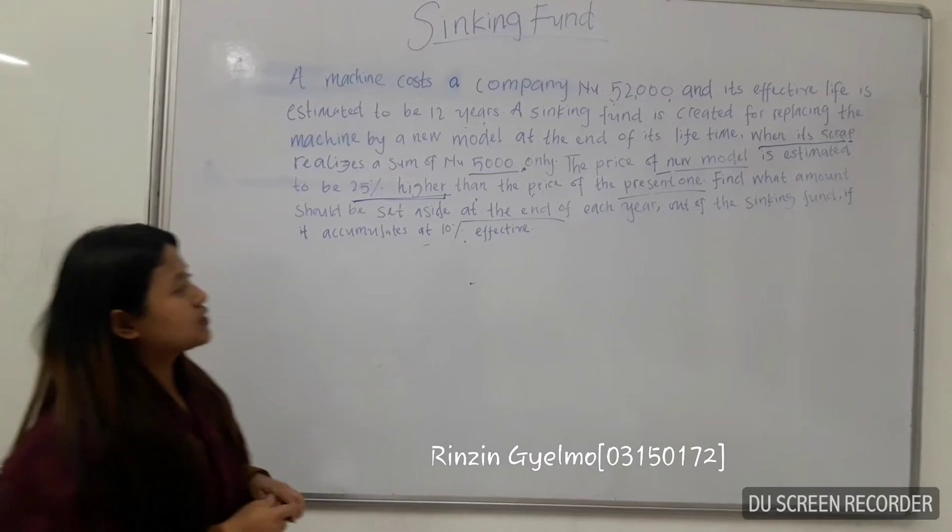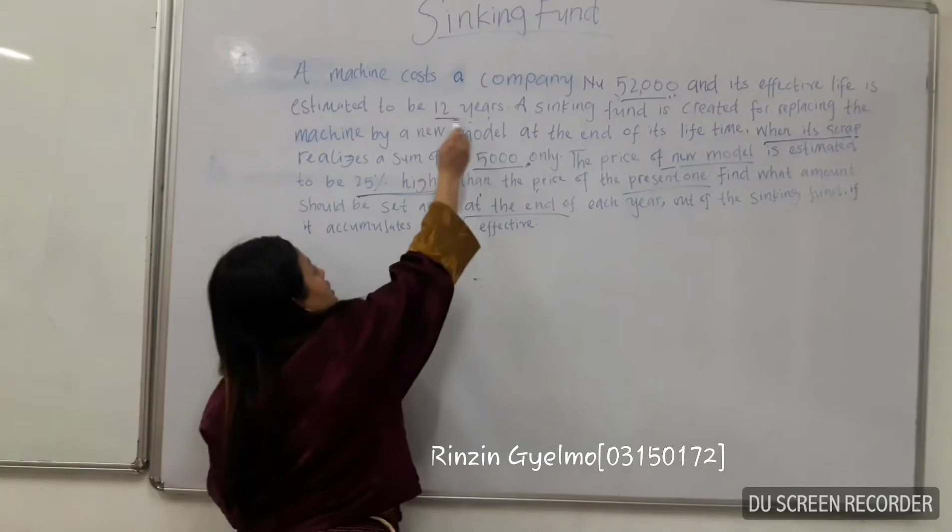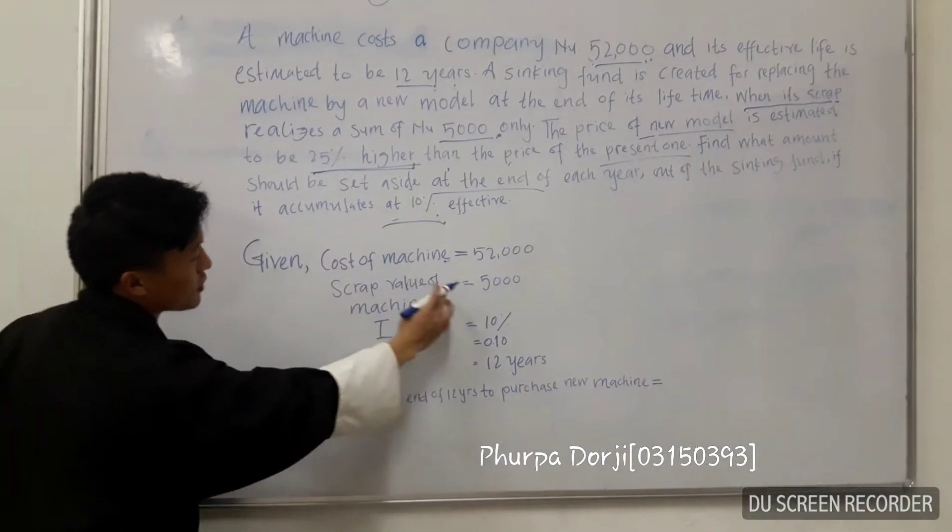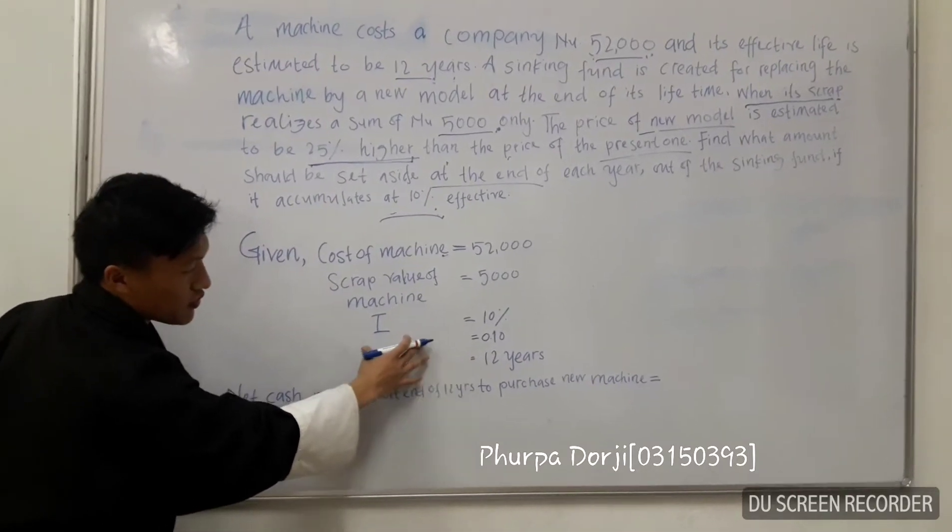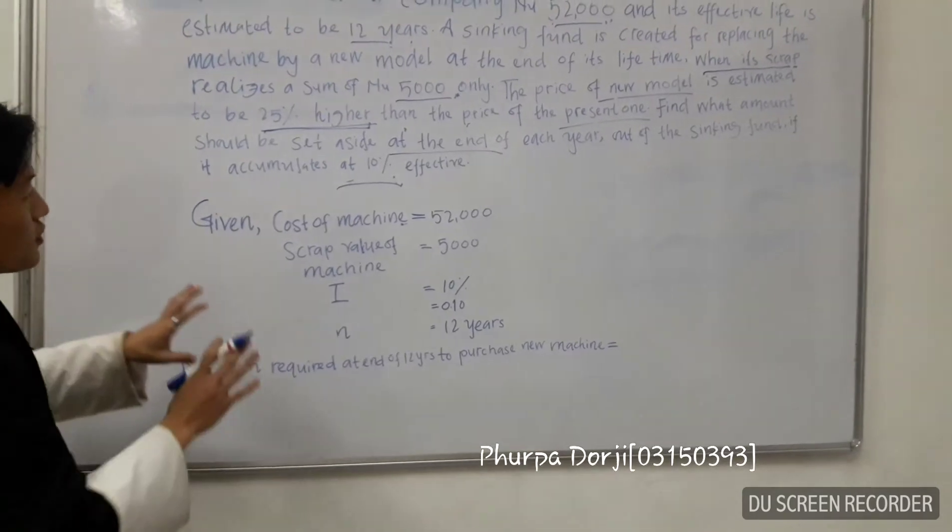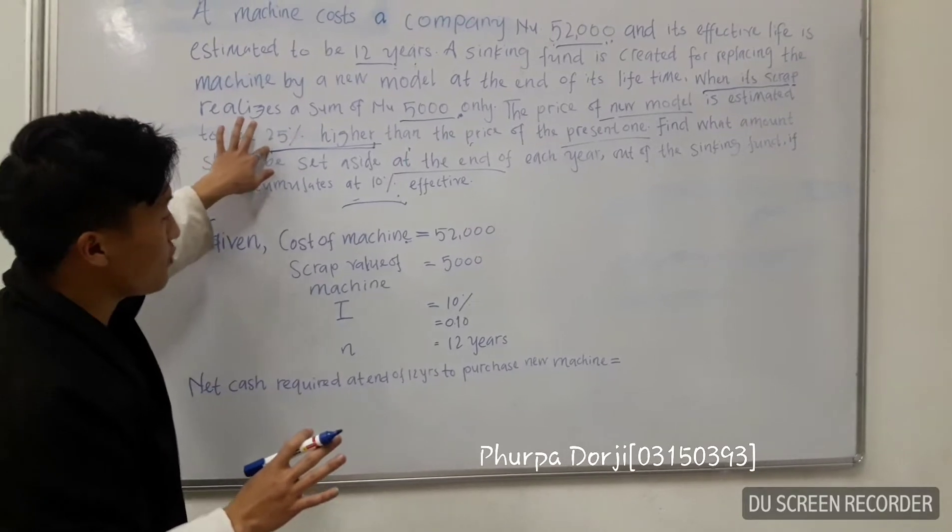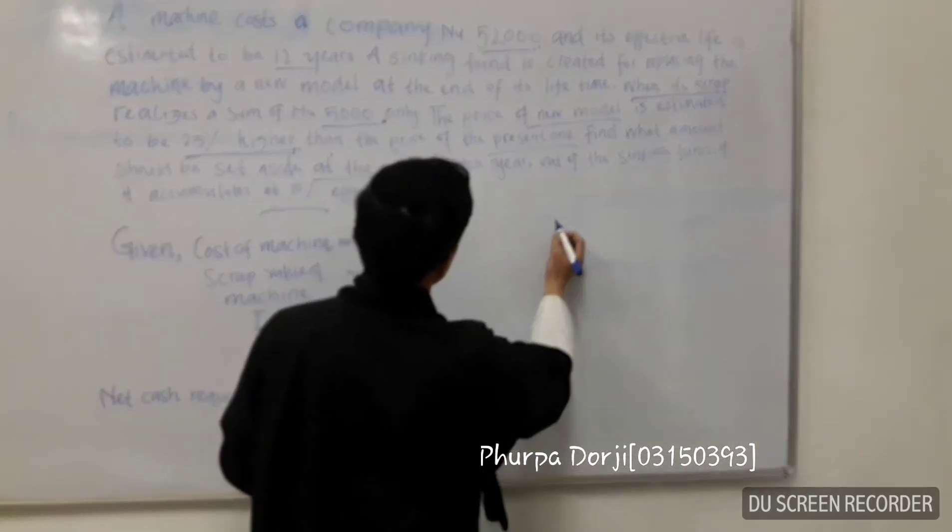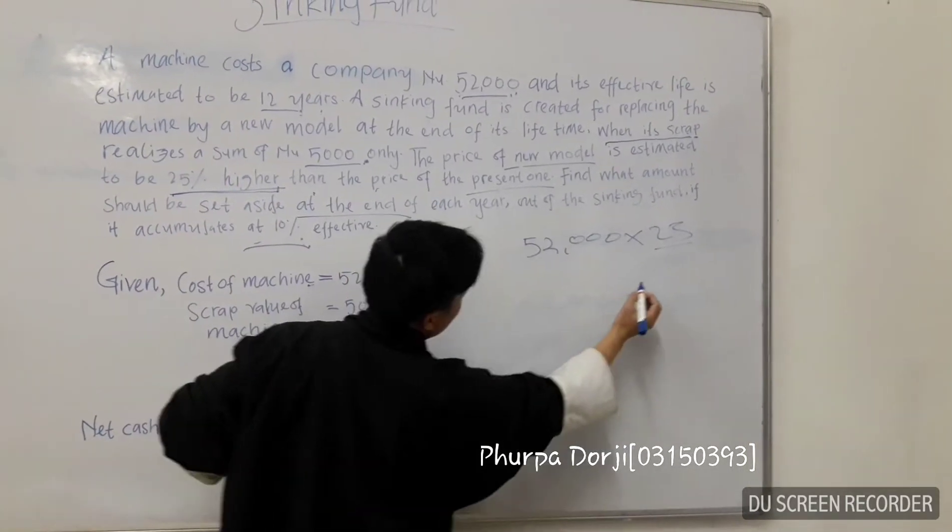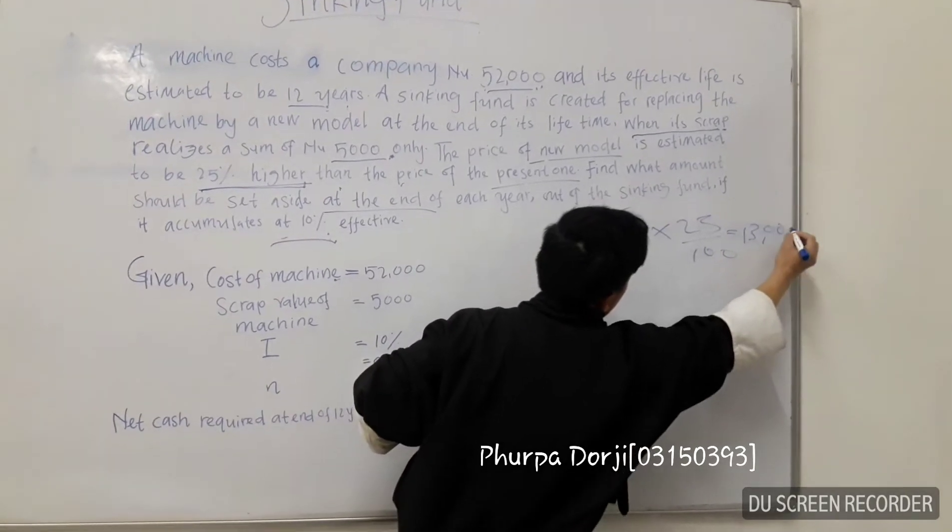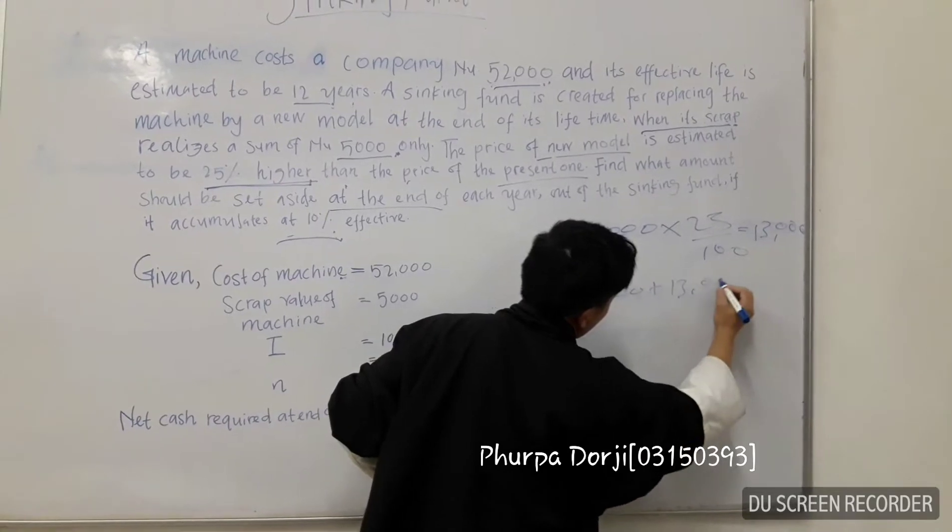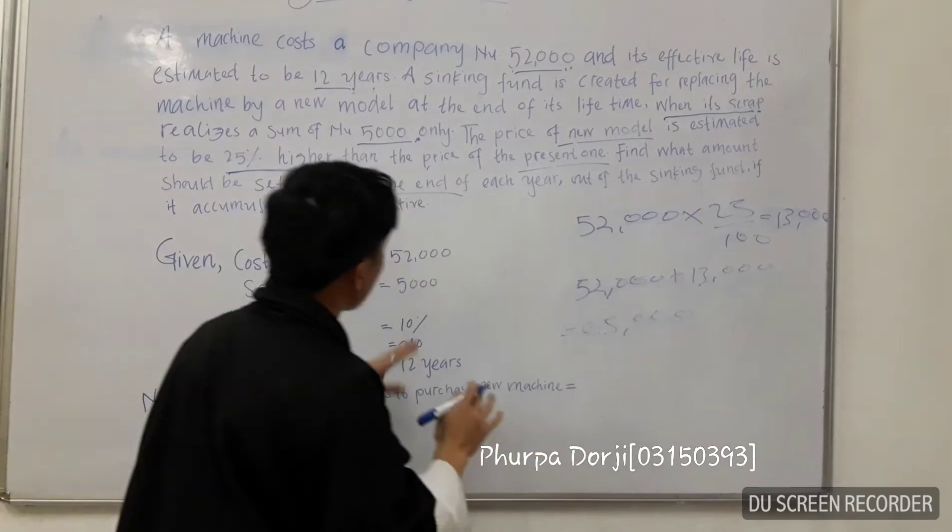The cost of the present model is $52,000, its life is expected to be 12 years, and the interest rate is 10%. In this question, I will compare the new model with the present model. It's given as 25% higher than the present model. 25% of 52,000 is 13,000. Then we have to add that 13,000 with the cost of the present model, that's 52,000 plus 13,000, which equals 65,000. This will be the total cost of the machine including the new model.